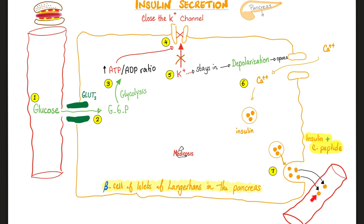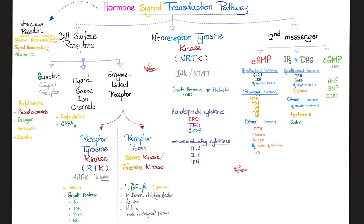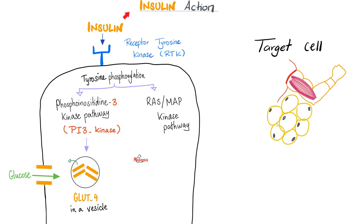When they open the GLUT4, glucose comes inside the fat cell and the skeletal muscle cell. Now insulin has reached the target — skeletal muscle or fat cell — and insulin will try to convince them to open their door, GLUT4. When they open their door, glucose is going to come in. How does this happen?